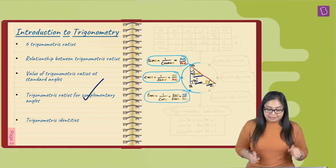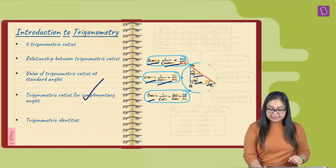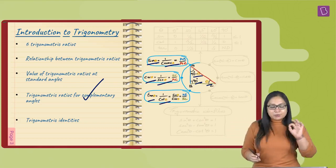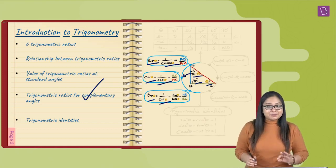Standard trigonometric angles. Sin theta is 1 upon cosec theta, cos theta is 1 upon secant theta, and tan theta is 1 upon cot theta. And what they come out from this particular right triangle. Exactly. We've connected that.